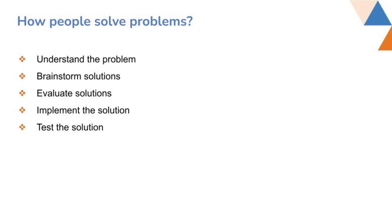After evaluating, you choose one solution and go ahead with implementing it. The chronology is straightforward: understand the problem, brainstorm solutions, evaluate, and then implement. Finally, you come up with tests for the solution — this is the first level of testing from the developer side, where you test what you implemented and see if it is working as expected.